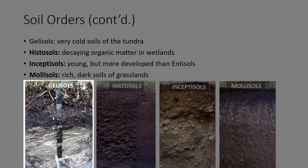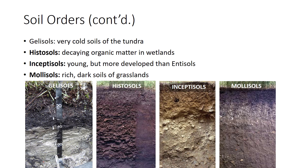Gelisols are very cold soils of the tundra, cold desert, or high peaks. Gel means cold. There is permafrost in the subsoil. Often the surface is peat because the cold, wet conditions inhibit decay. There may be evidence of soil disturbance from freeze-thaw cycles. Gelisols are also a very large carbon sink. In the United States, they are found mostly in Alaska.